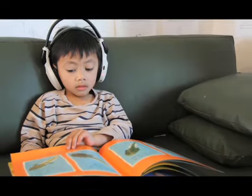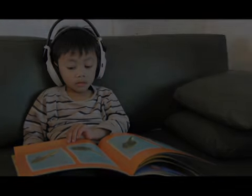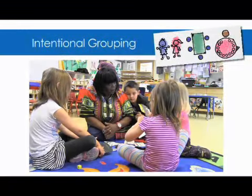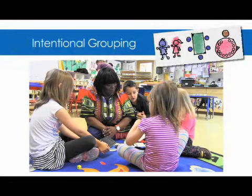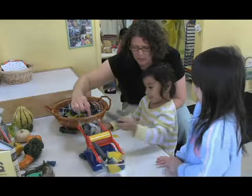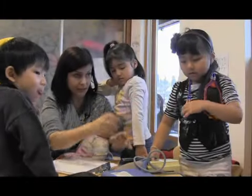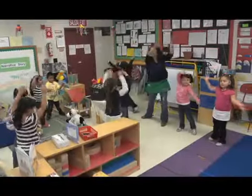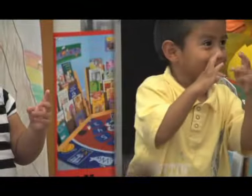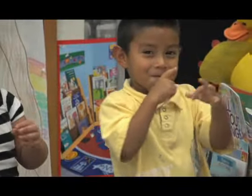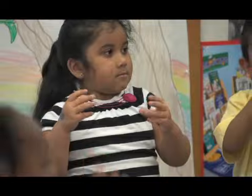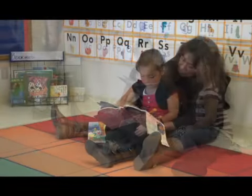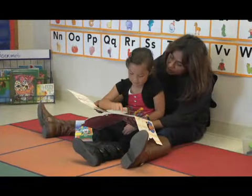We include one more feature of the environment when designing the environment for maximum learning. Teachers want to be intentional about how they group children, whether it's a decision made in the moment or as part of lesson planning. Match the size of the group with the purpose of the activity. Young children need opportunities to participate and learn with the whole group, smaller groups, and they will thrive with a bit of one-on-one time with an adult.